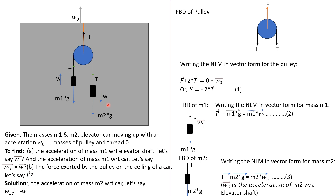Let us solve this problem. W1 is the acceleration of the mass M1 with respect to the elevator shaft, meaning outside — with respect to ground. And W, as already mentioned, is the acceleration of mass M1 with respect to the car.